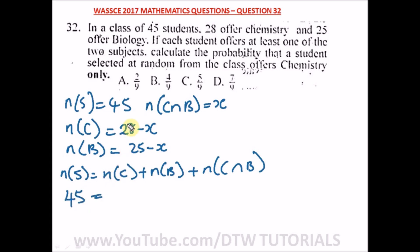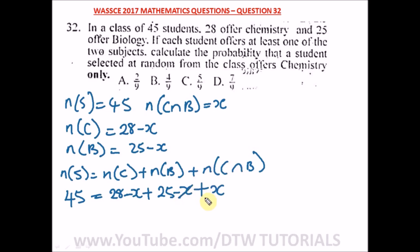We have 45 as the total number of students. So: 45 = (28 minus x) plus (25 minus x) plus x. This simplifies as the x terms partially cancel, giving us 45 equals 28 plus 25 minus x.